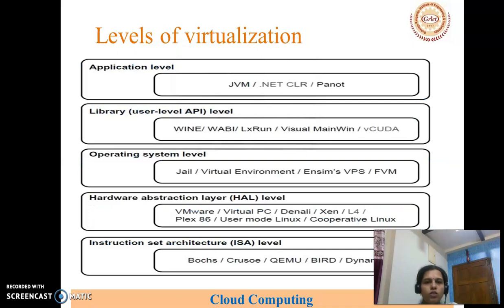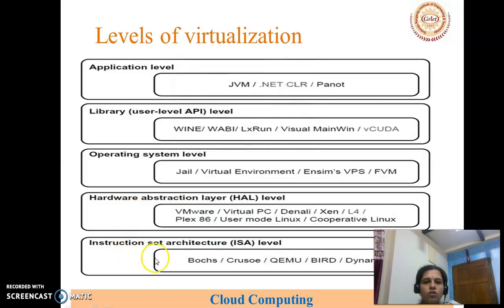The different levels of virtualization are: application level, library level virtualization, operating system level virtualization, hardware abstraction layer virtualization, and instruction set architecture level. Different levels exist for implementing virtualization, and we will see them one by one.